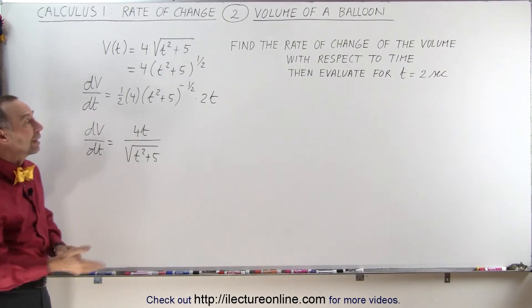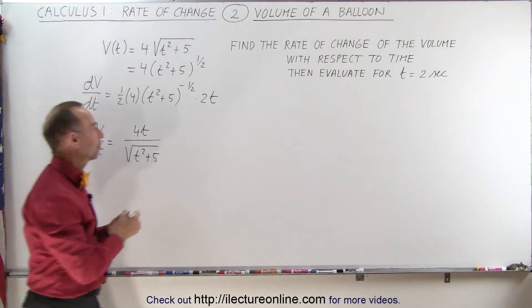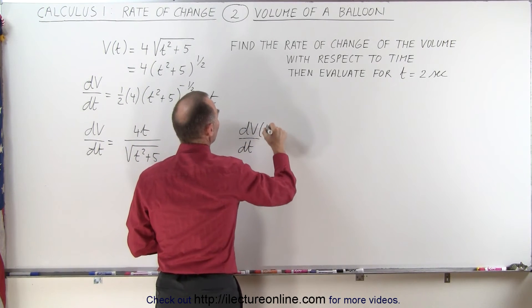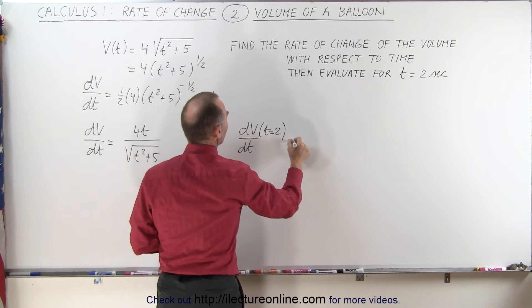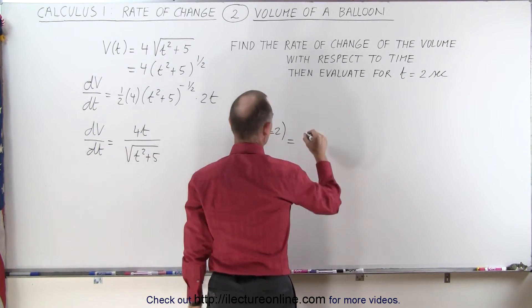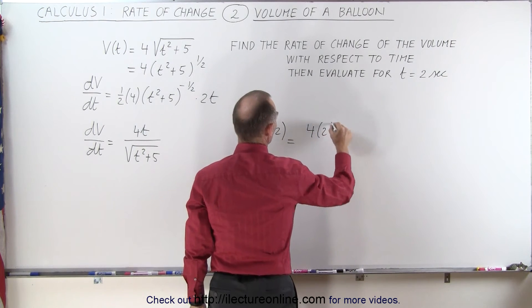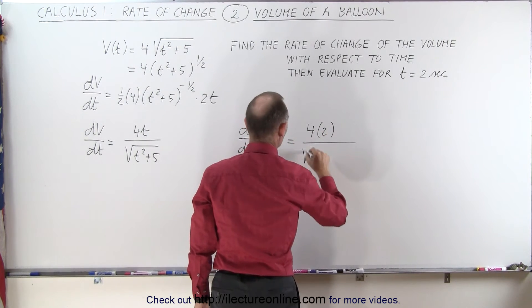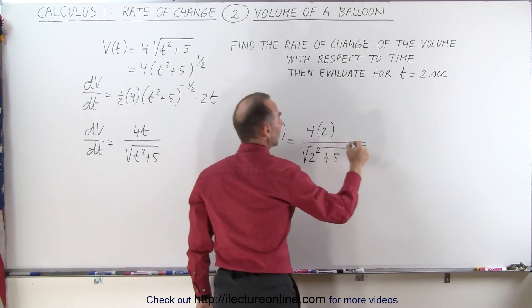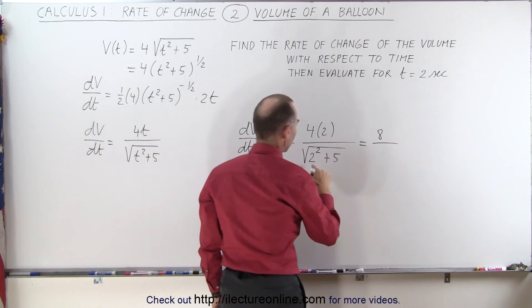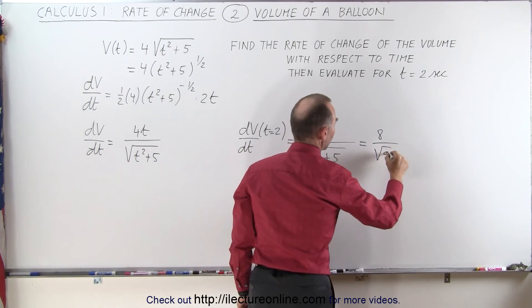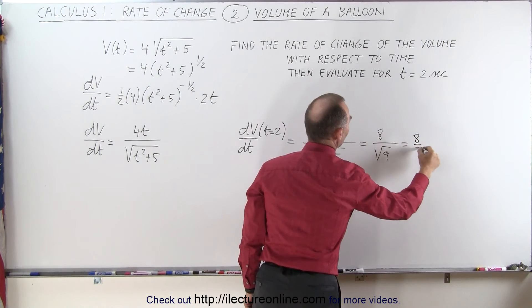Now we can evaluate that when time is equal to 2 seconds. So the dV/dt when t equals 2 seconds is equal to, and now all we have to do is plug in 2 for every t that we see in here. So it would be 4 times 2 divided by the square root of 2² + 5. So that would be equal to 8 divided by the square root of 4 + 5, that's 9, the square root of 9. So that's equal to 8 divided by 3.